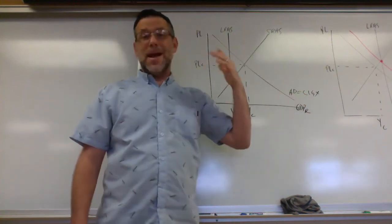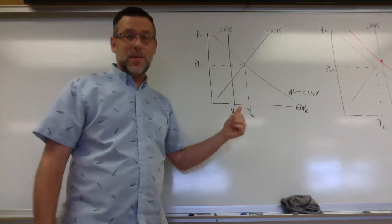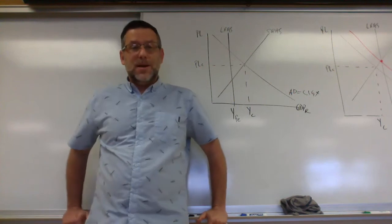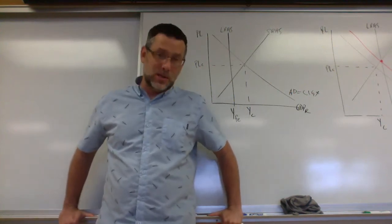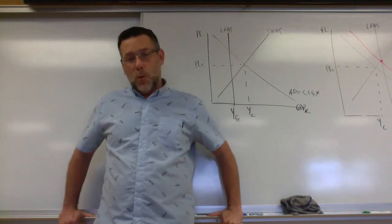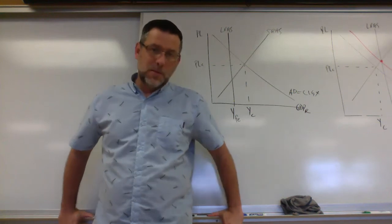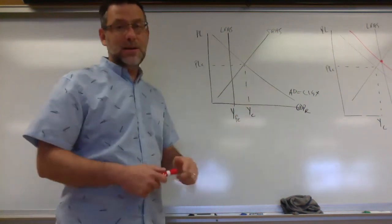So we call this contractionary fiscal policy, when we shrink aggregate demand to close this gap. If we raise taxes, then consumers spend less money that shrinks aggregate demand, or the government can spend less money, they can cut government spending. They can say, we're not going to build as many roads this year, we're not going to hire as many teachers this year, we're not going to build as much wall on the border with Mexico, we're not going to spend as much money on food or shelter for homeless people, we're going to cut back on government spending, reducing aggregate demand.